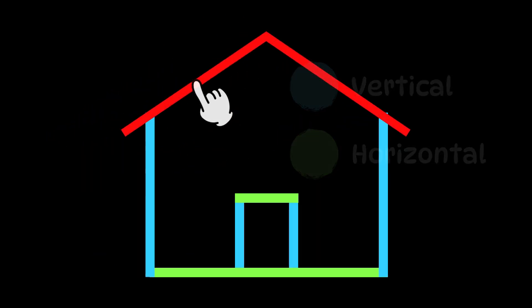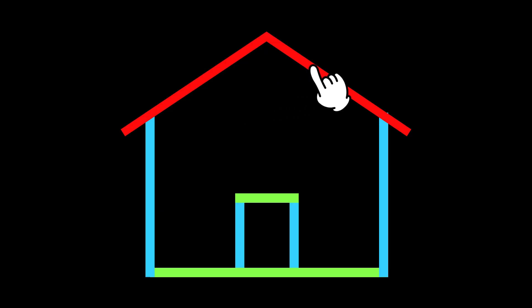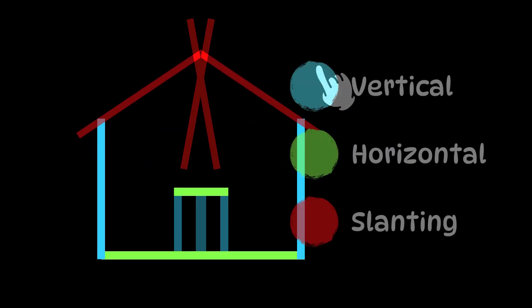And the red color lines that you see that are tilted like a slide, those are slanting lines.